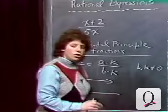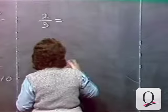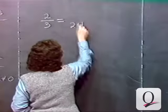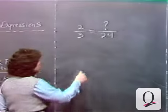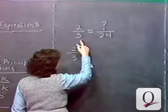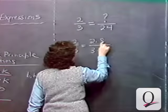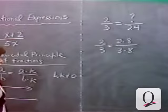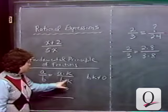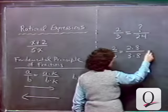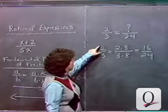Let's try an example using arithmetic fractions. Starting with two-thirds, we want to find an equivalent fraction with a denominator of 24. Since 24 is 3 times 8, we multiply the denominator by 8, so we must also multiply the numerator by 8. Thus 2 over 3 equals 2 times 8 over 3 times 8, which is 16 over 24. Two-thirds is equivalent to 16 twenty-fourths, accomplished by multiplying top and bottom by 8.